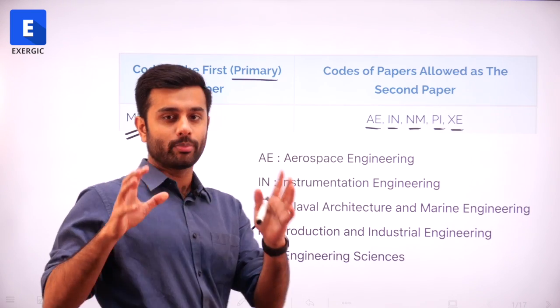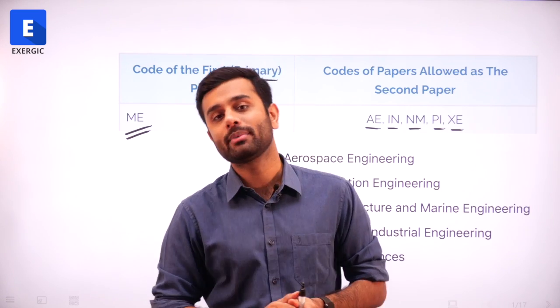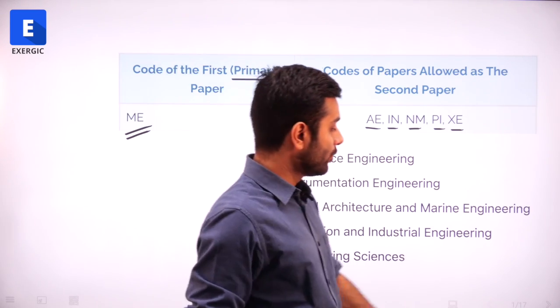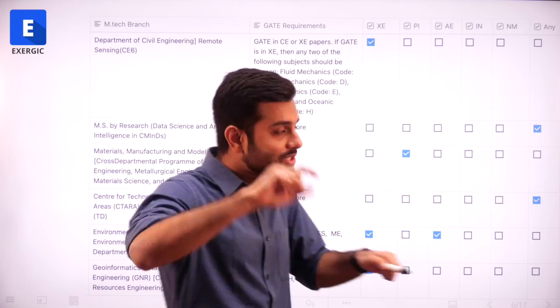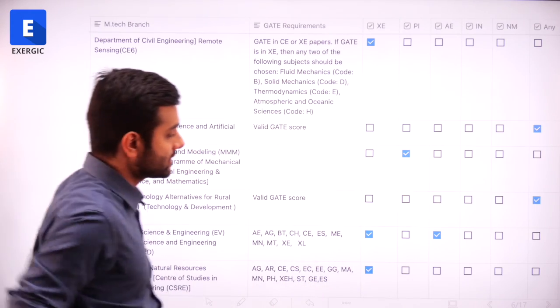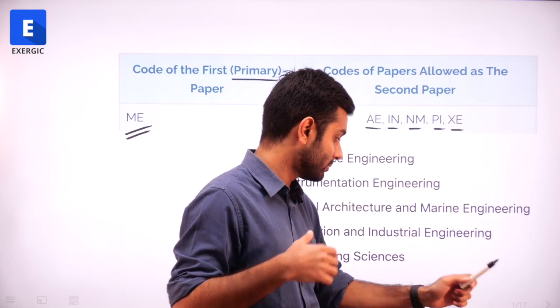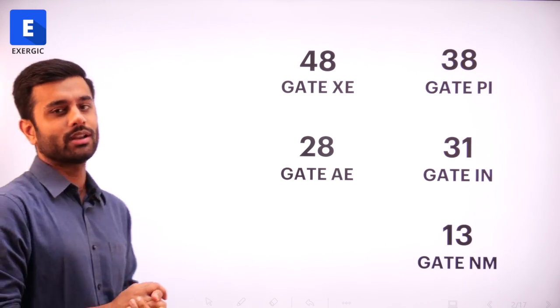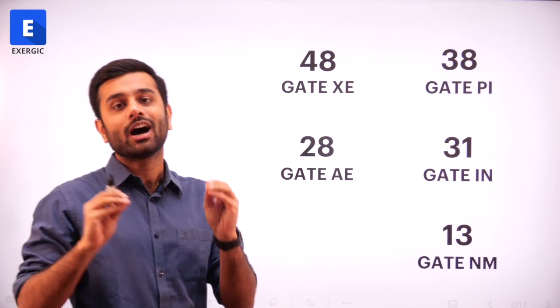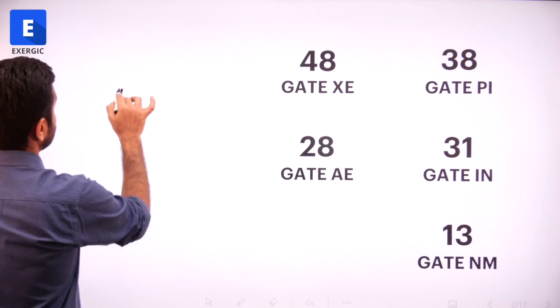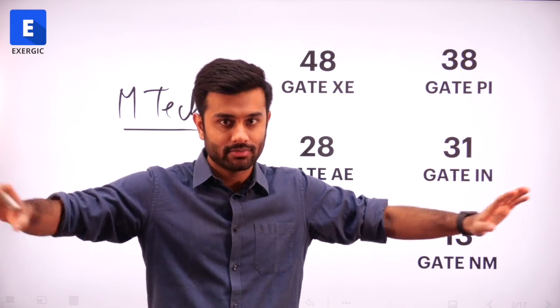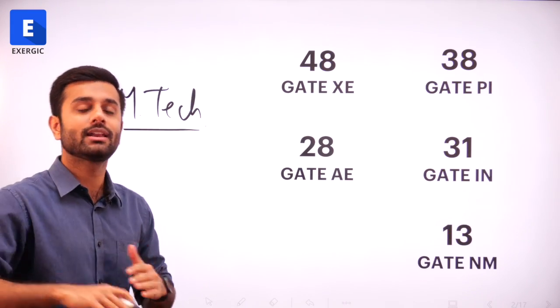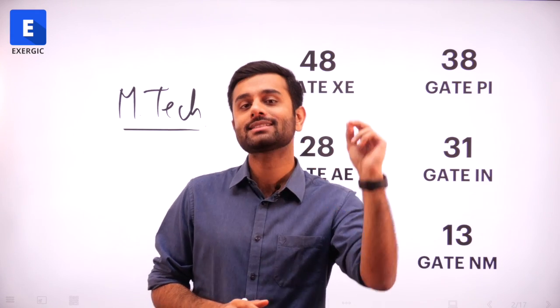XE and PI are the top two most discussed second paper choices for gate mechanical. In this video, I am going to show you the college-wise detail and in which college which of these are eligible for any given branch. I will not read out everything — I will tell you the conclusion. But before the conclusion, have a look at these numbers showing how many different M-Tech specializations you can apply for in top IITs and IISC.